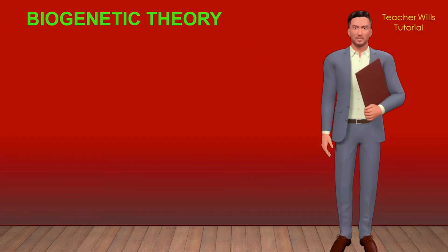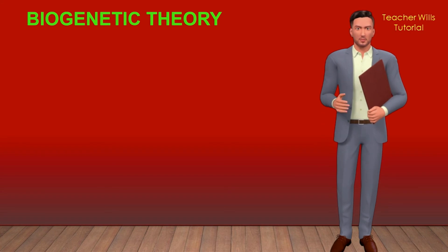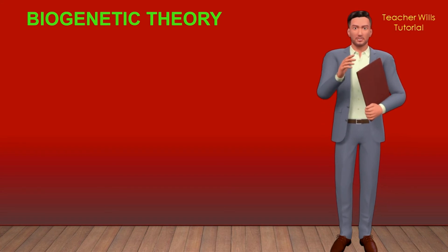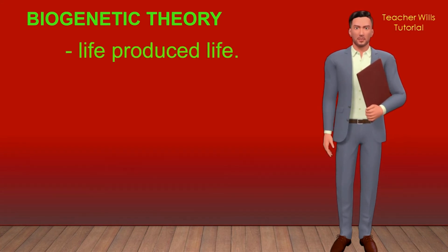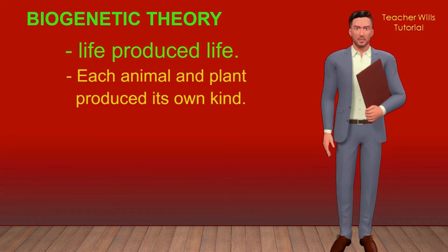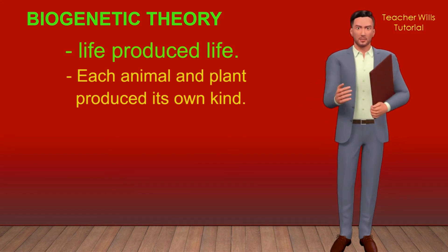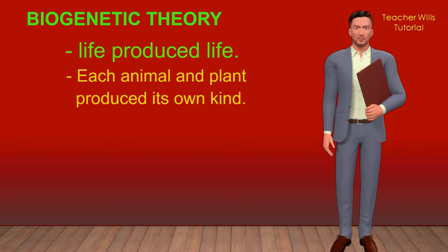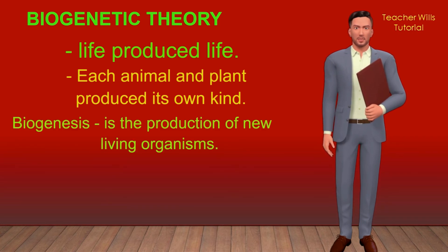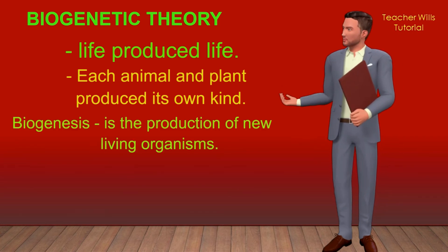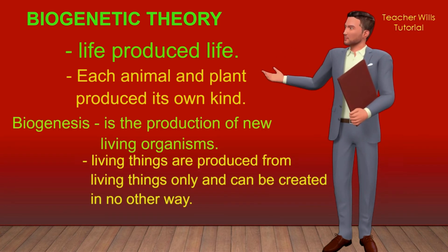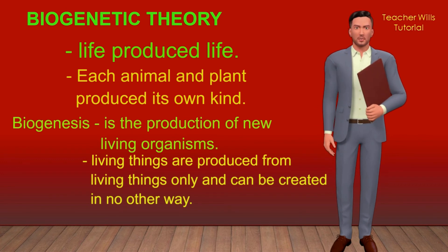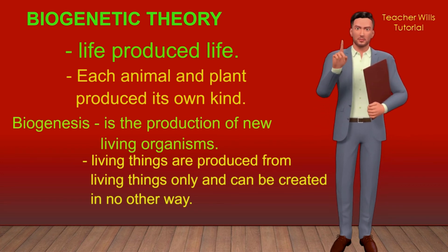The biogenesis theory: ancient scientists knew from the common experience of farmers and shepherds that life produced life — that each animal and plant produced its own kind. They saw that earthworms grew out of tiny eggs that had been laid by other worms. Biogenesis is the production of new living organisms. It states that living things are produced from living things only and can be created in no other way.